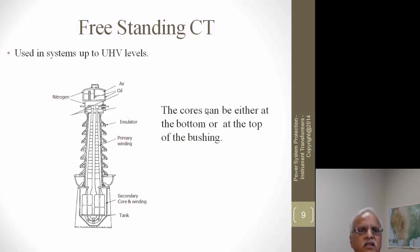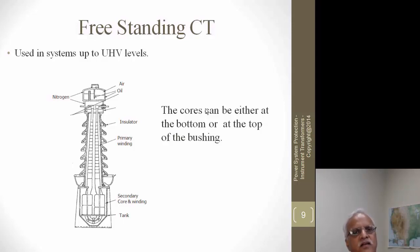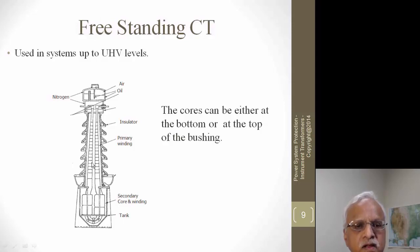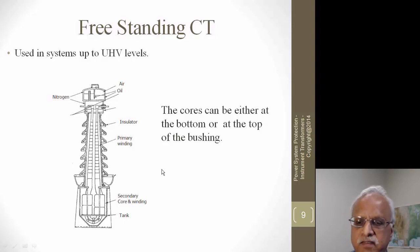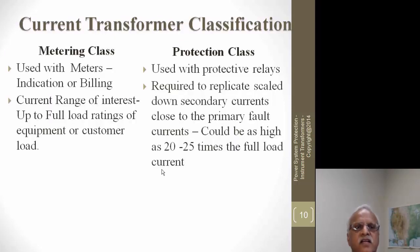Freestanding CTs are used on live-tank breakers where there are no bushings — the interrupter is insulated, standing by itself, with no space to put the cores on. So you have a separate freestanding CT on its own insulator. In this example, the primary winding comes down, goes through four cores and back. There are four cores here, and the secondary windings come out — either at the bottom or top of the tank, depending on the manufacturer.